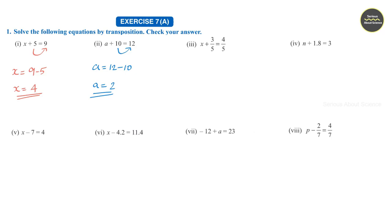Third question: h plus 3 by 5 is equal to 4 by 5. Here, 3 by 5 can be taken to the RHS. So the equation becomes h is equal to 4 by 5 minus 3 by 5. Now the denominators are same, so we can directly subtract: h is equal to 1 by 5.